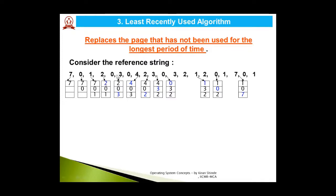Continuing: page 0 is already present so no replacement is needed. For page 3, we compare {2, 0, 1} by scanning backward. For page 4, we compare {3, 0, 2}: scanning backward, page 0 was used here and page 3 was used here, but page 2 was used much earlier compared to 0 and 3. So page 2 is the victim and is replaced by page 4.